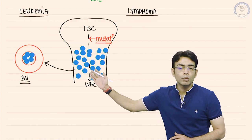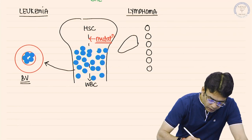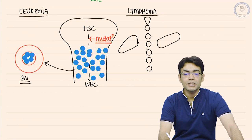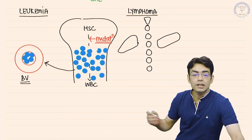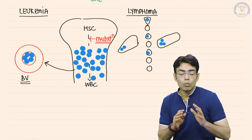The difference is simply WBC blasts in the blood versus WBC blasts in the lymphoid organs. The lymphoid organs include lymph nodes, liver, spleen, and thymus. These blasts travel to these organs and settle there.